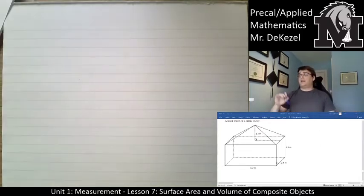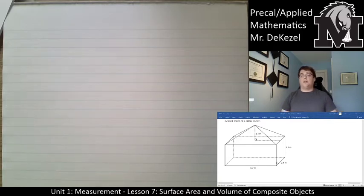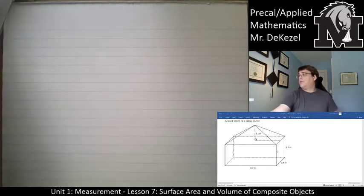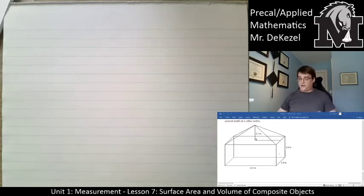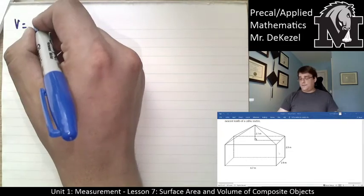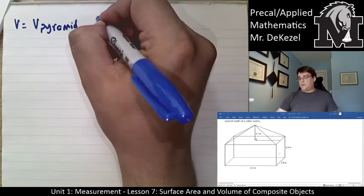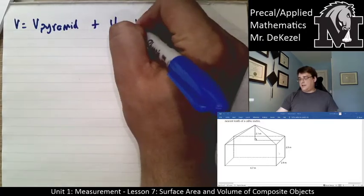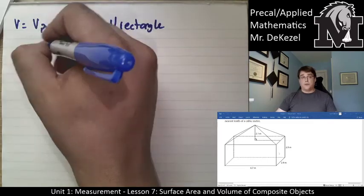We're finding the volume of this whole thing right here. It is a box — a rectangular box with a pyramid on top — and we are finding the volume of it. The volume of this object is going to be the volume of the pyramid plus the volume of the rectangle. When we break it down, that's actually not too bad because we know both of those formulas.